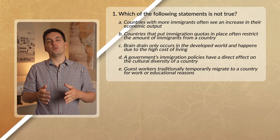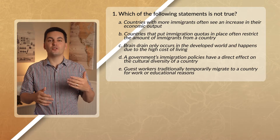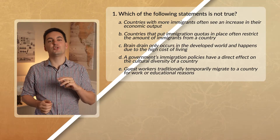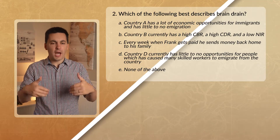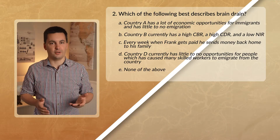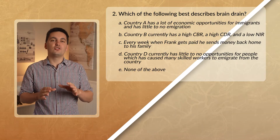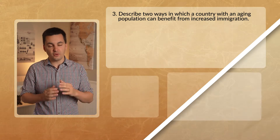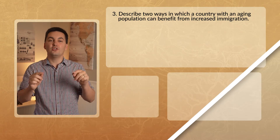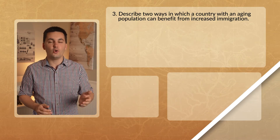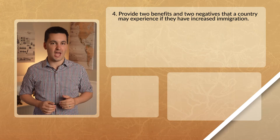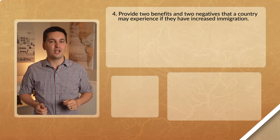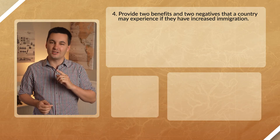All right, there you have it — a quick overview of the different effects of migration. Congratulations, you just finished Unit 2 of AP Human Geography, but now comes the time to practice what you've learned. Don't forget to also check out my Unit 2 summary video that covers all the major concepts you need to know before your unit test or the AP exam. As always, I'm Mr. Sin — thank you so much for watching, and I'll see you next time.